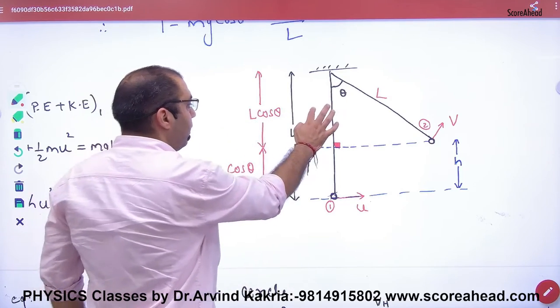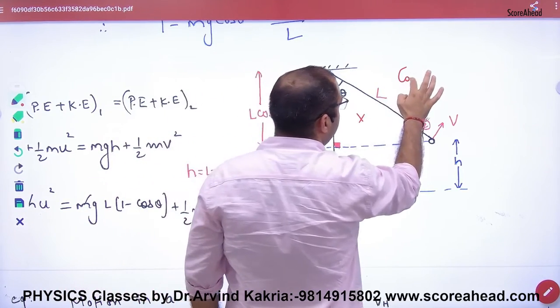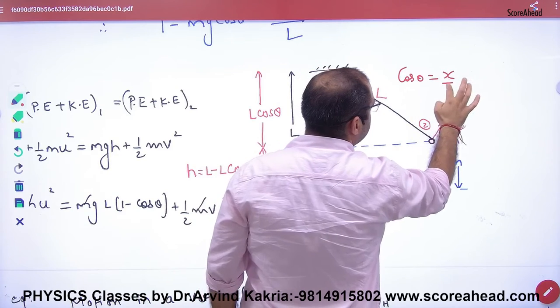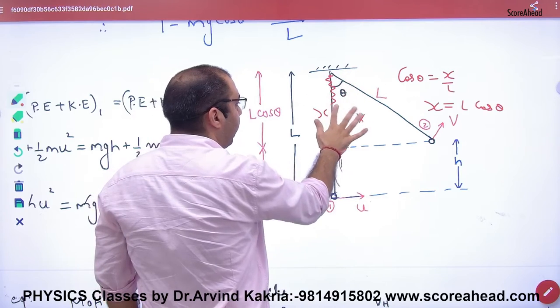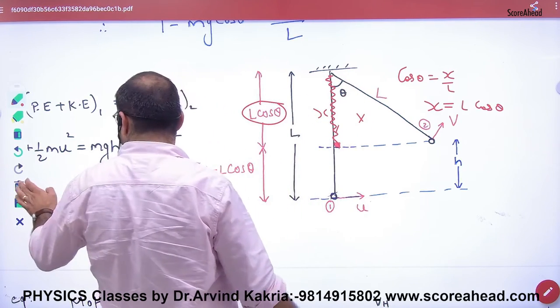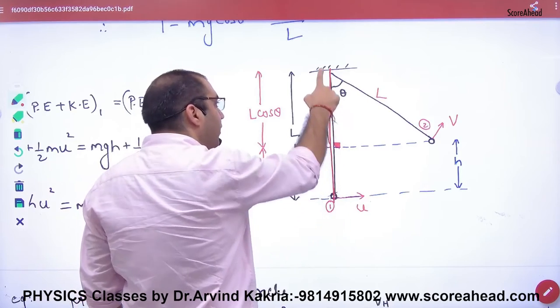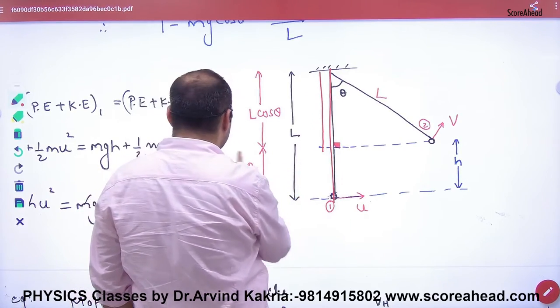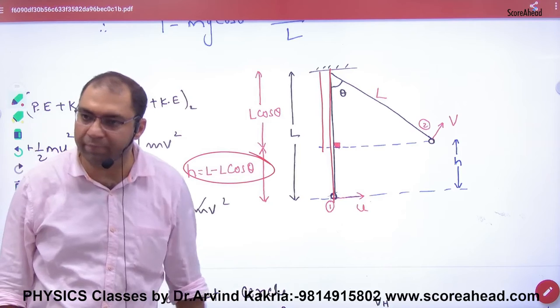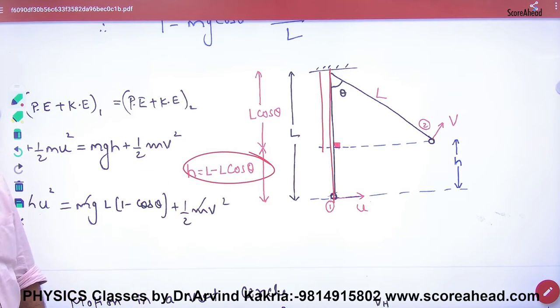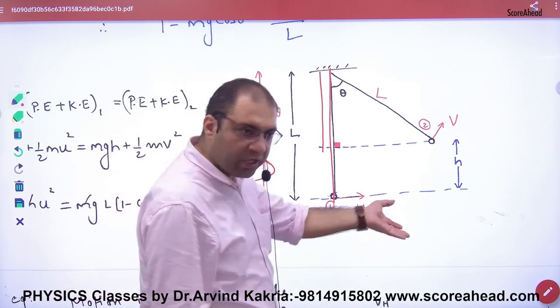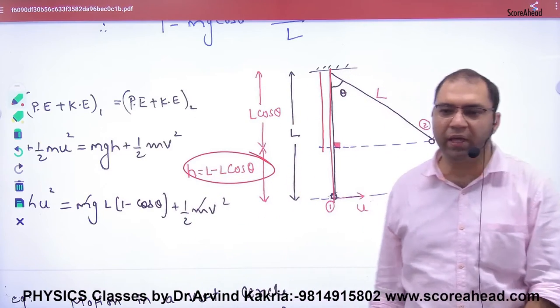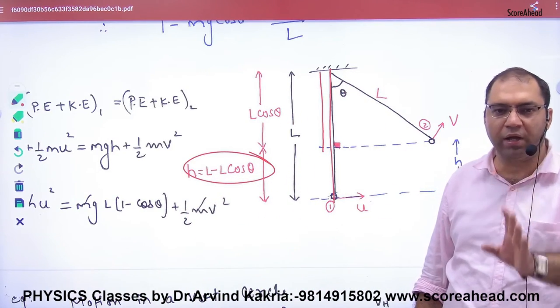This height is L, and this vertical distance is L cos theta. So h equals L minus L cos theta. When solving pendulum problems, don't work out the geometry every time; just use the formula directly: h equals L minus L cos theta.